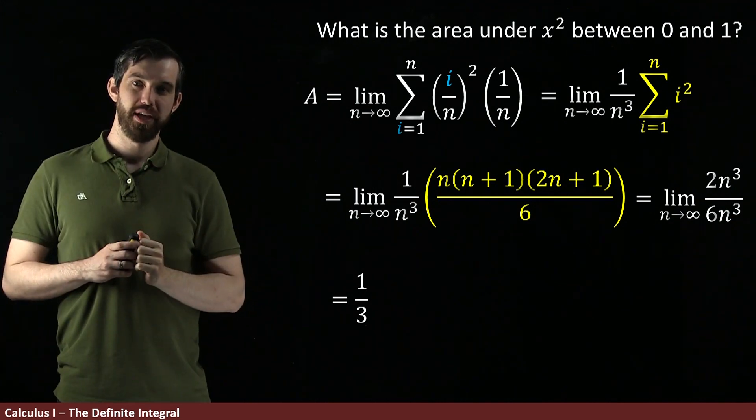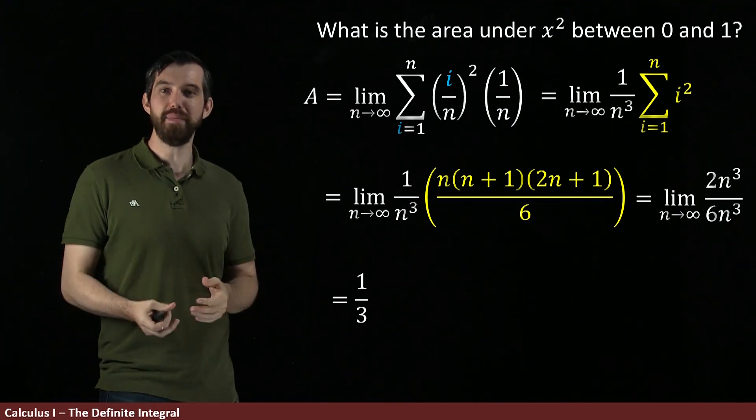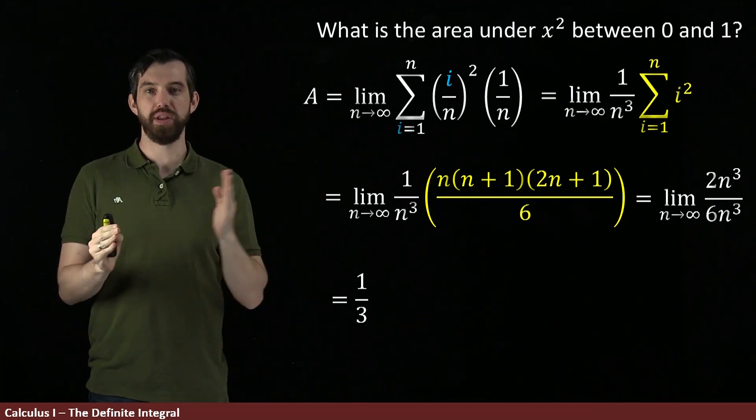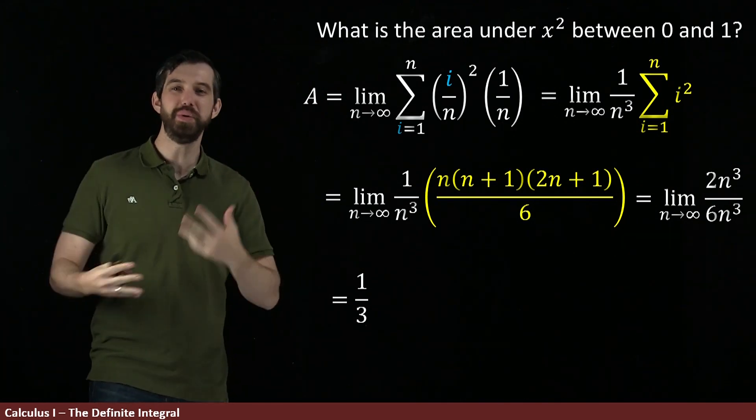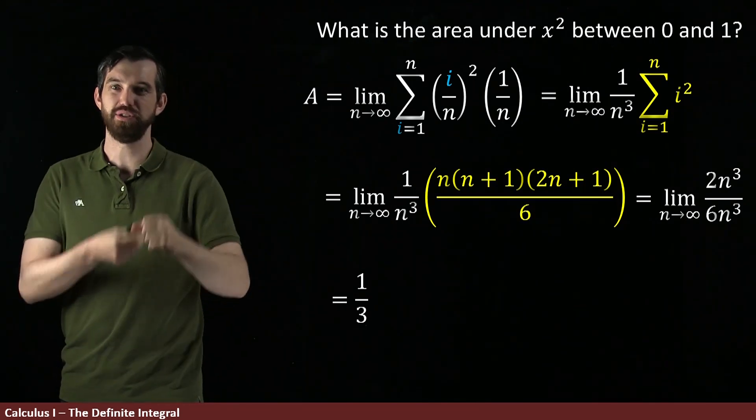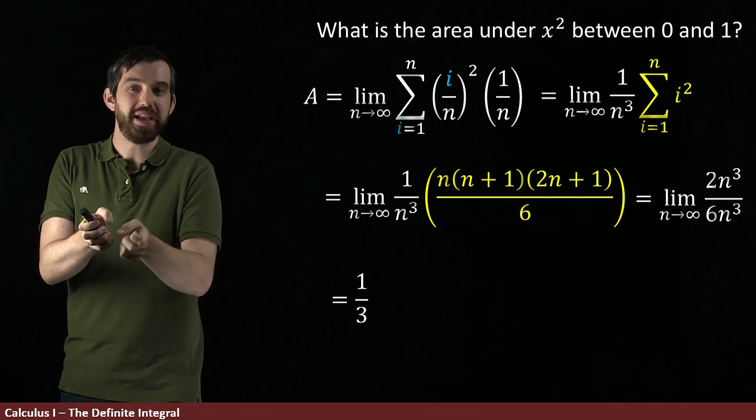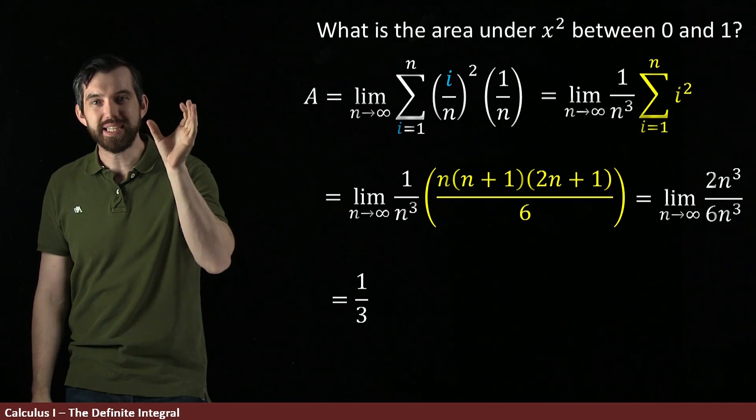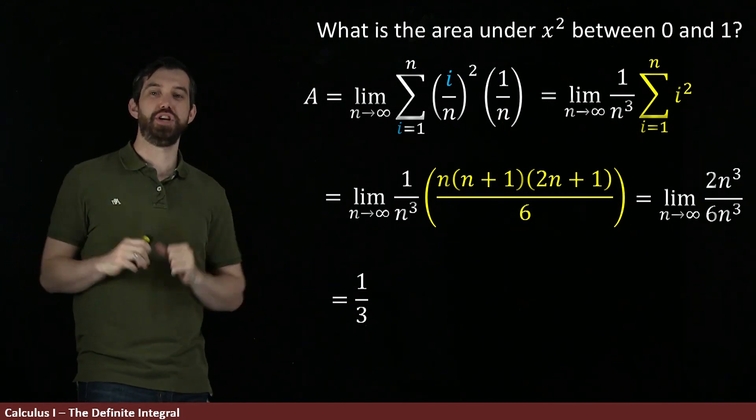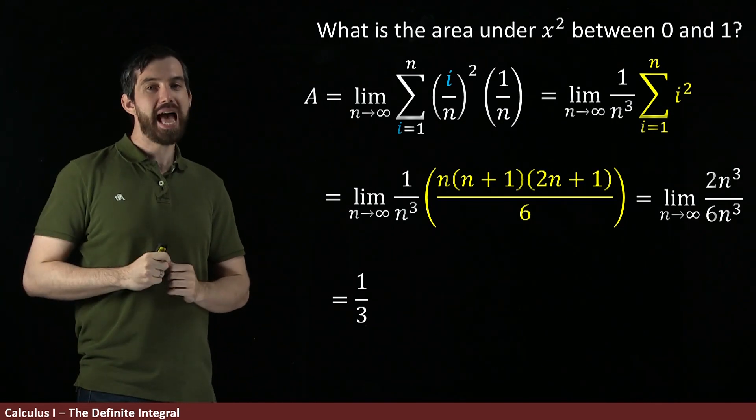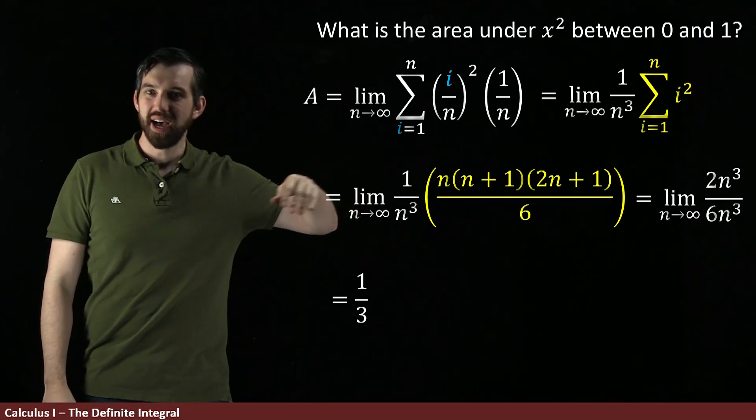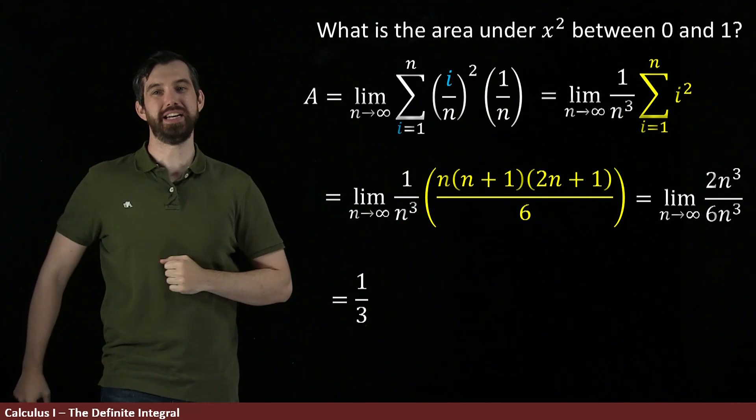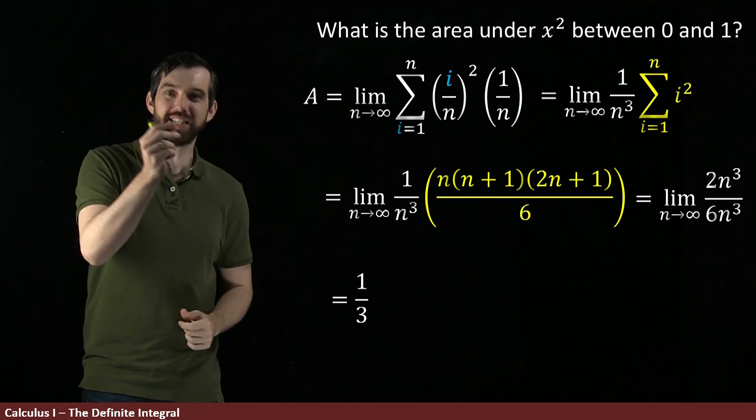And now we have an answer. This is the first time in the last couple of videos that we've actually managed to figure out what was the area underneath the curve x squared between the point 0 and 1. And notice that while we were doing rectangle approximations, if I use 5 rectangles or 10 rectangles or 100 rectangles, I could compute them all out on my calculator and get a value that might be close, but it wouldn't be the exact value. The claim here, the magic of the definite integral, is that it gives you the exact value.